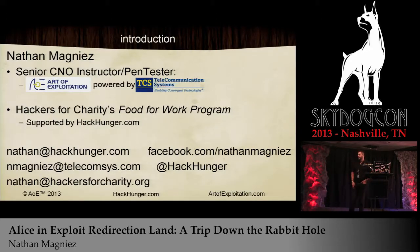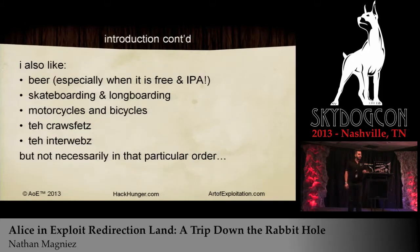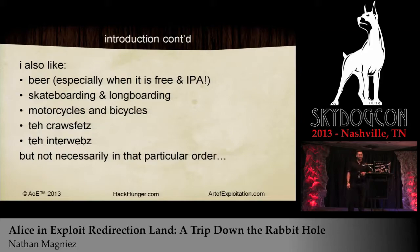A little bit about me. My name is Nathan Monnier. I do pen testing work and instruction for computer network operations. I also do a little bit of work with Hackers for Charity with their Food for Work program. You can contact me at any of the things at the bottom. Shout out to my company — Art of Exploitation and Telecommunication Systems — for sending me here. I also like beer, skateboarding, and longboarding. Anyone been to DerbyCon? I was the guy on the scooter with the pirate flag and pink bell. Note to self: skateboarding and beer do not go together.